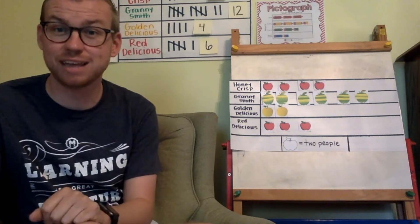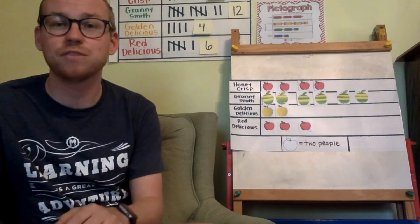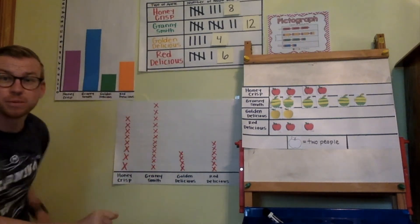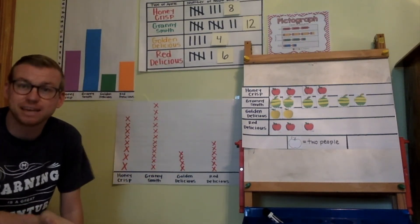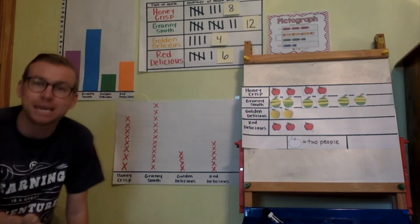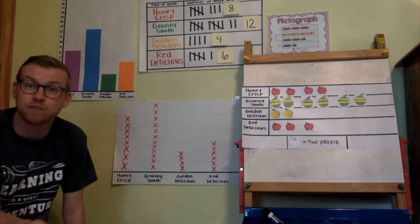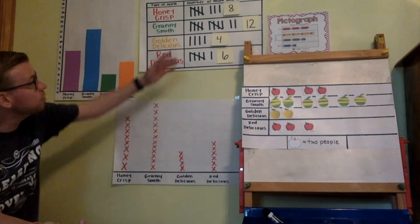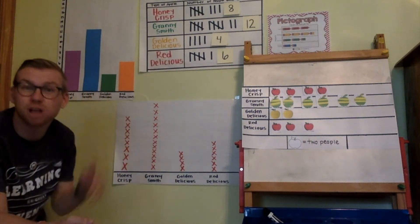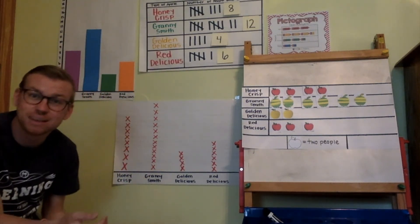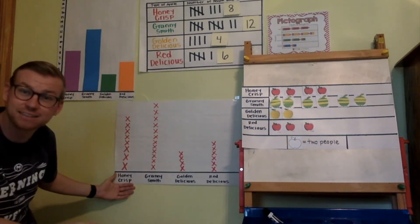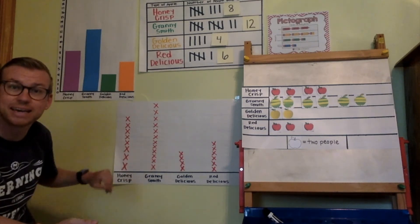We're going to interpret this data together, then I'll let you go work on Google Classroom. One thing you might be asked is: how many total people were surveyed? We can do that in multiple ways — we could look at the tally chart and add eight plus twelve plus four plus six, or we can look at the line plot and count all the X's.